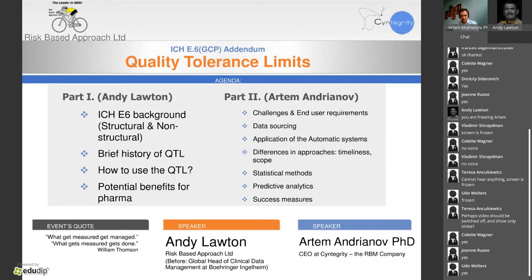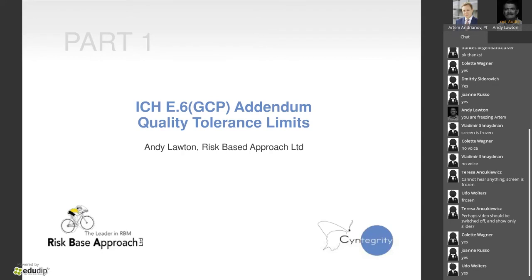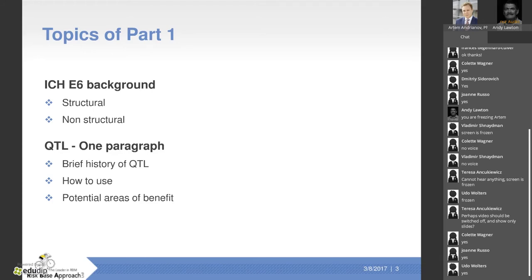Thank you Artem, and good morning, good afternoon, or whatever time it is around the world. I'm going to talk about the ICH E6 addendum section 5.04 on quality tolerance limits — in two ways: the structural background and non-structural background, which includes feedback from discussions with regulatory authorities. Then I'll cover that single paragraph which I think will radically change the way we address quality in our clinical trials.